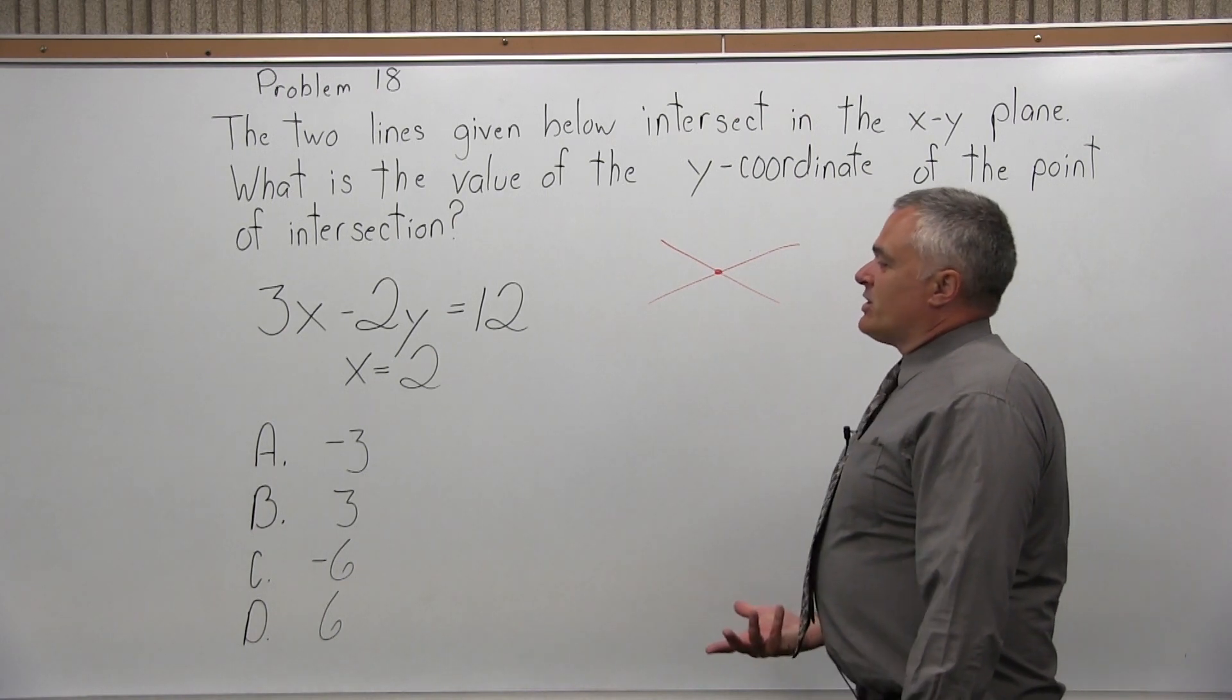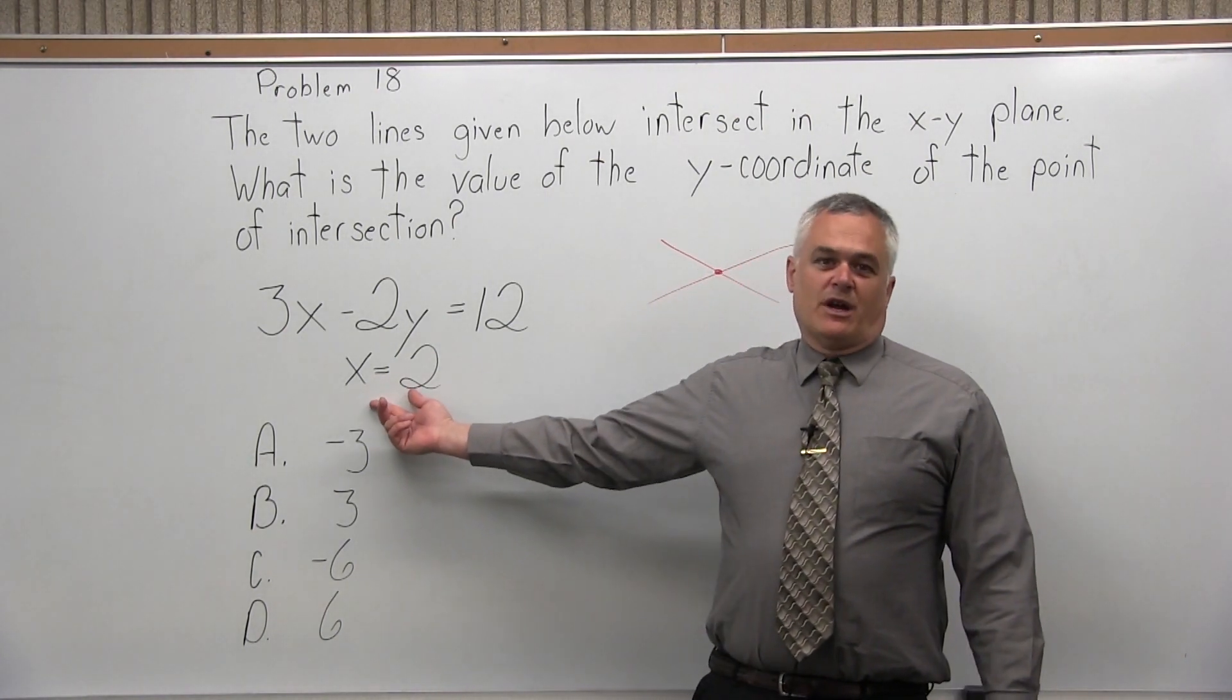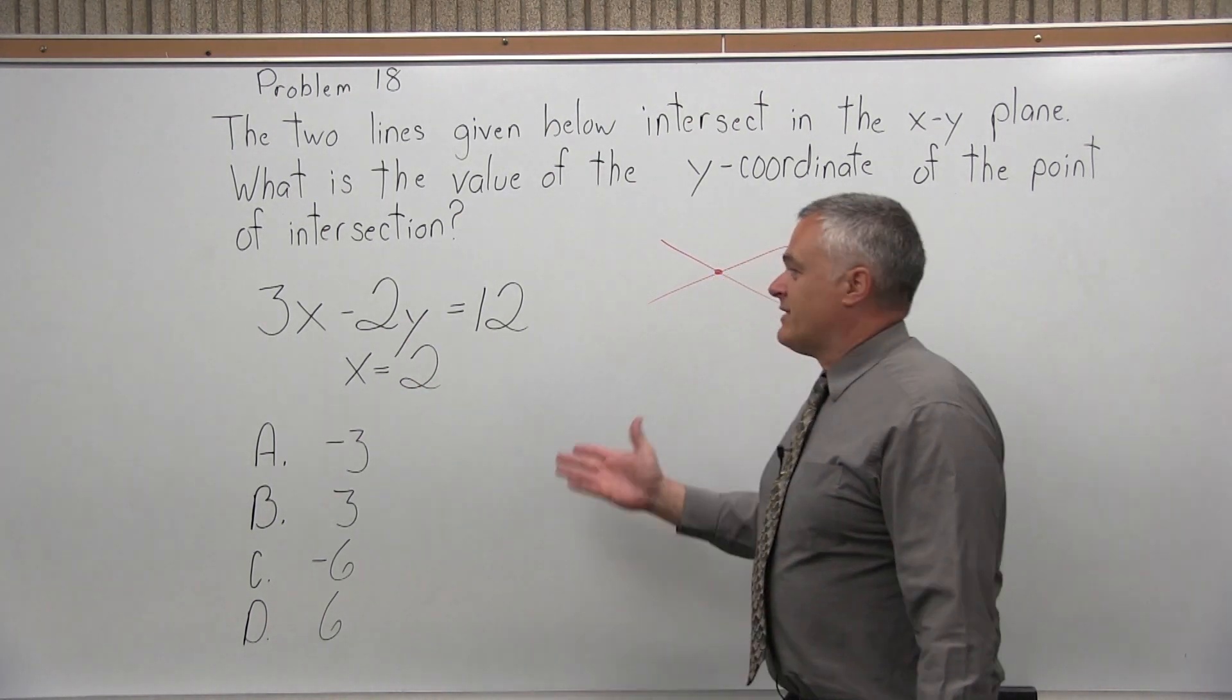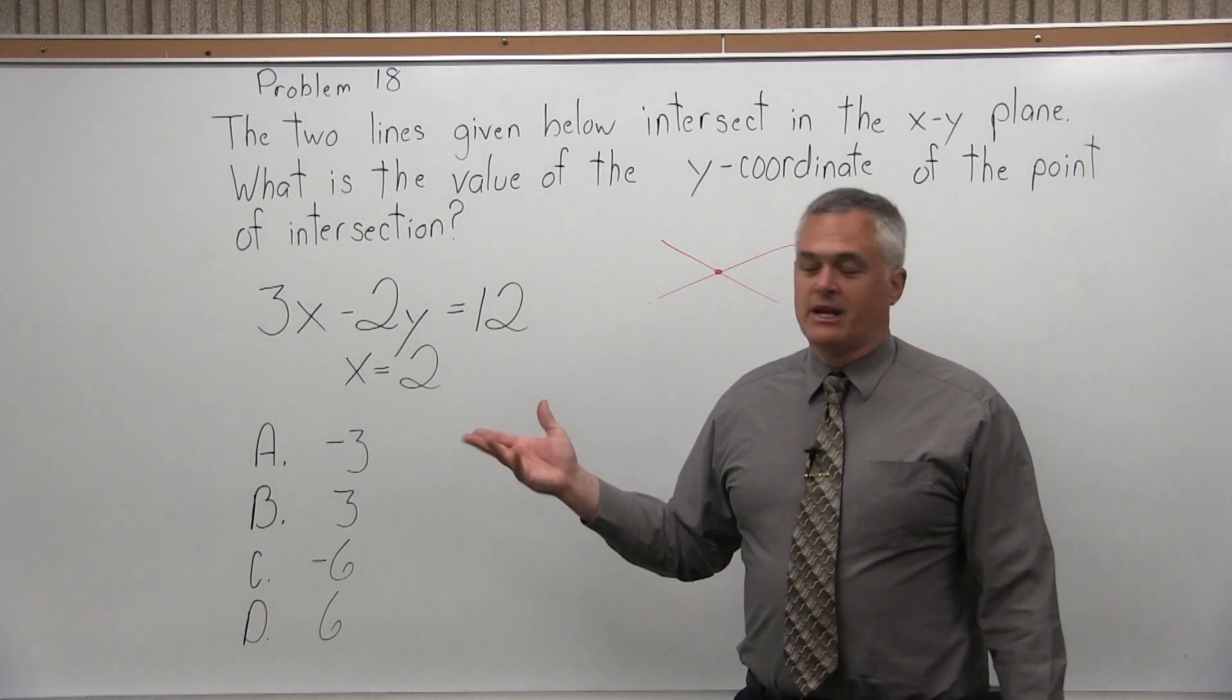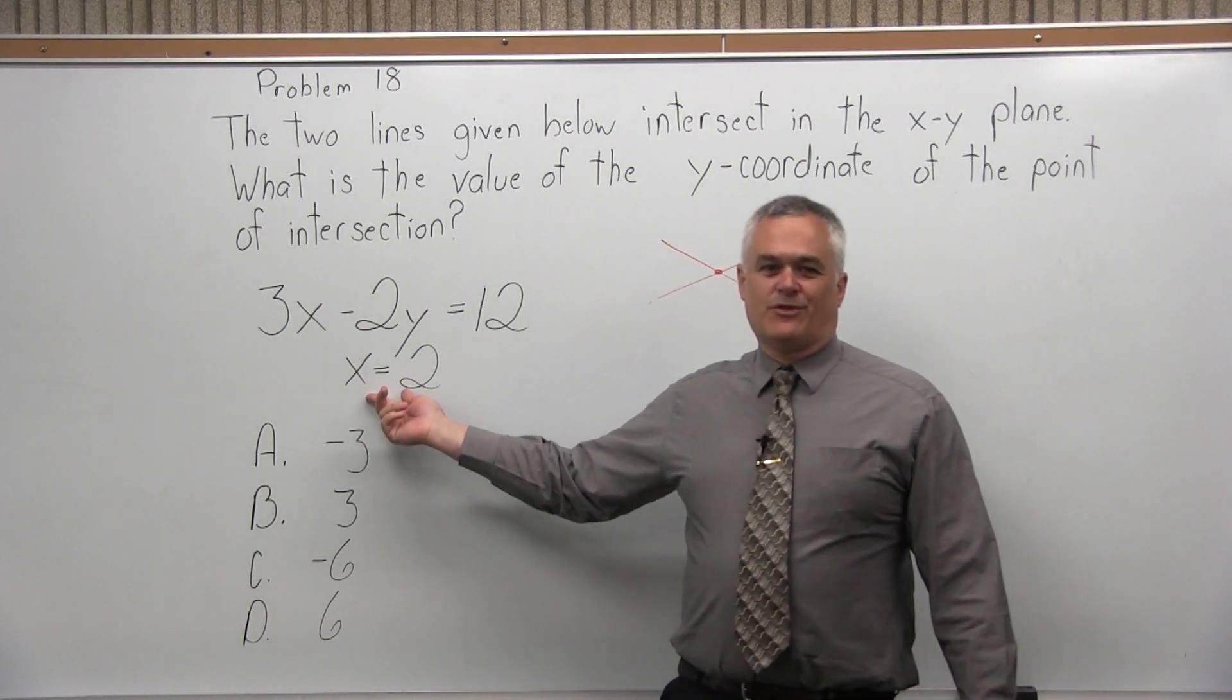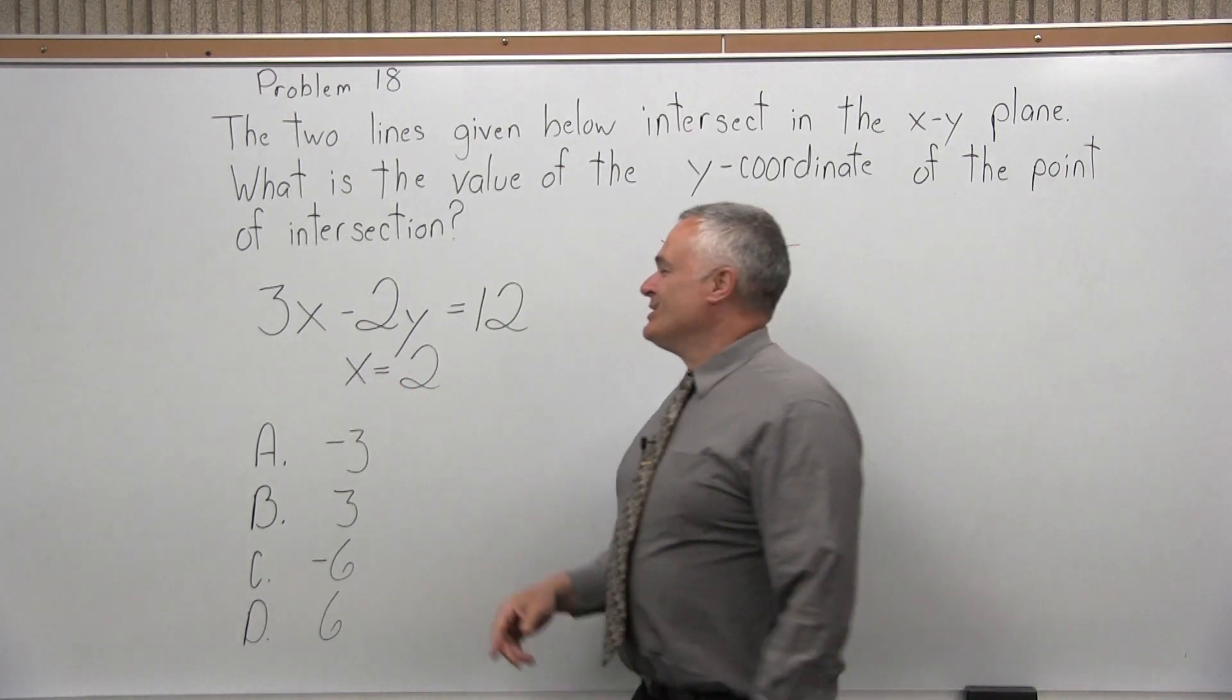Without drawing the graph, the second line - the answer for every x-value is 2. If you did draw the graph, it would be a vertical line at x equals 2. All you really need to know is that for every point on the second line, x is 2.